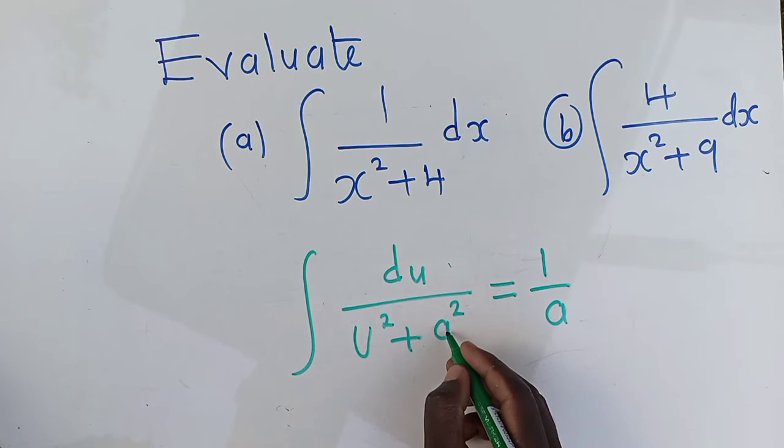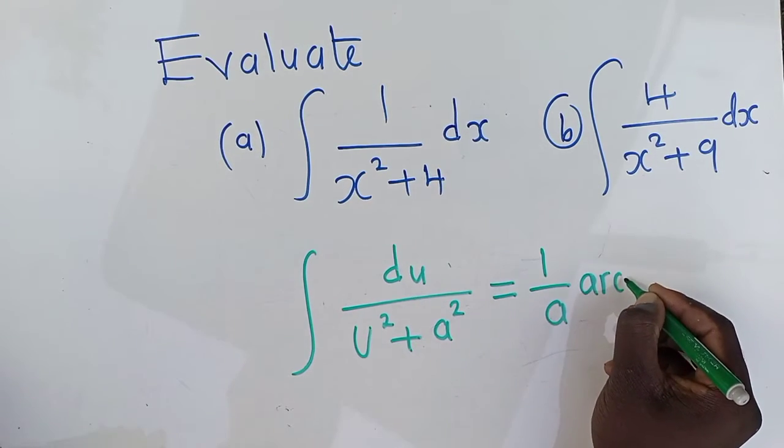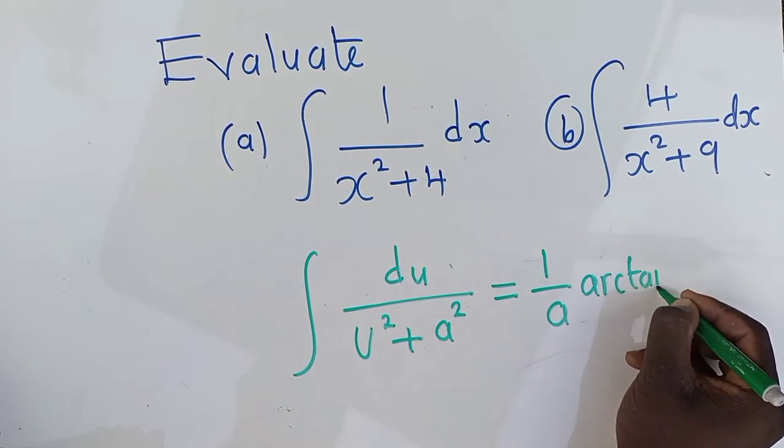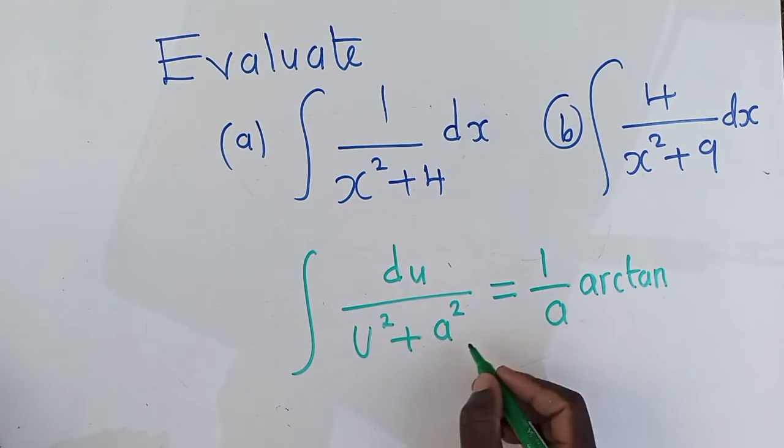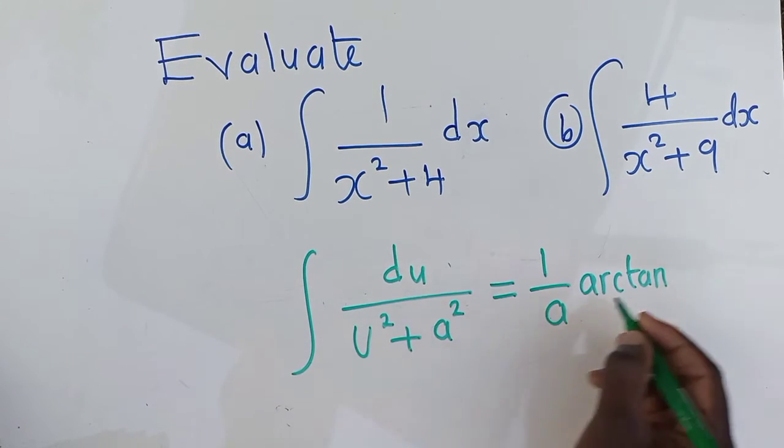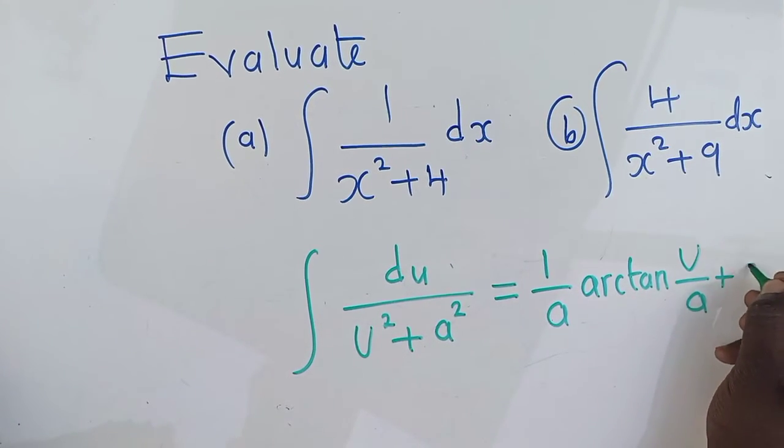So now, a power 2, and then we say arc turn—arc tangent. And then we come and write the variable that we are respecting on top here over the constant. Then we say plus C.